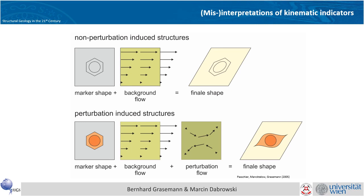It's more complicated with perturbation-induced structures, where we have different rheologies — for example a rigid core surrounded by a weak rim embedded in a matrix with a different viscosity. When this is deformed, the different rheologies create some kind of a perturbation flow, and adding this with a background flow, you might result in a final shape which is not always easy to interpret.